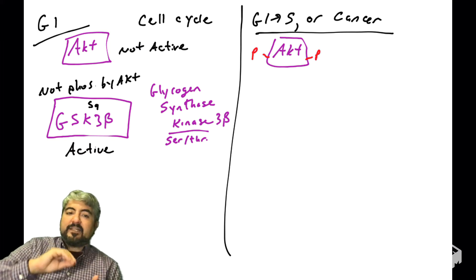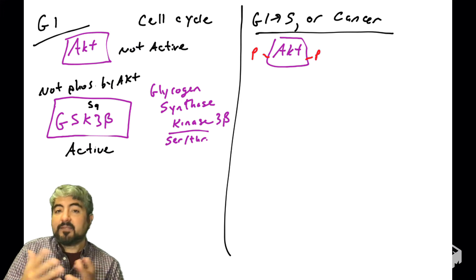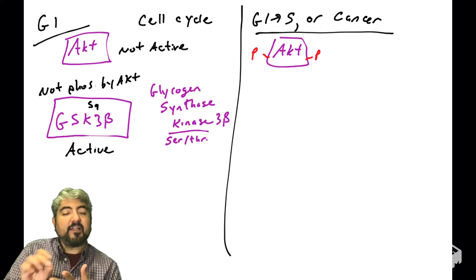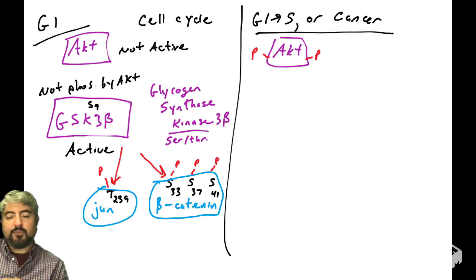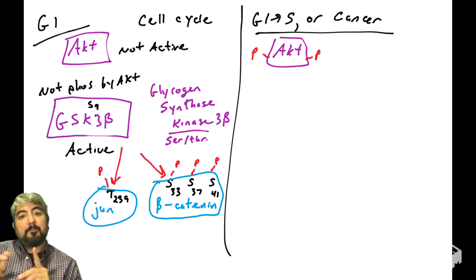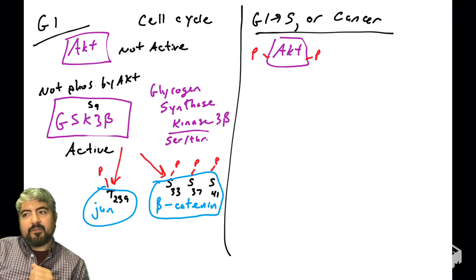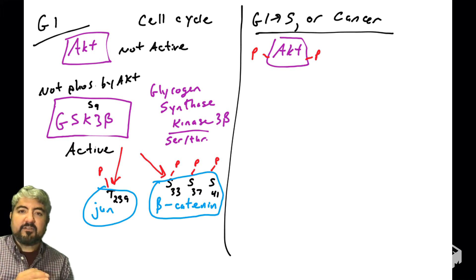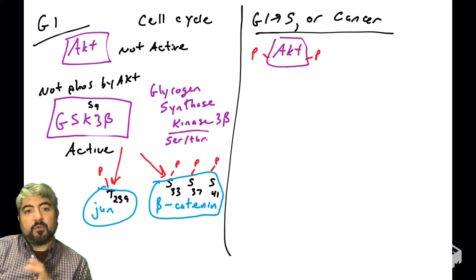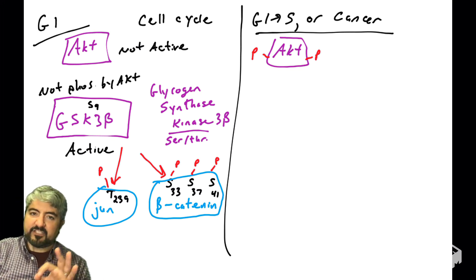When cells are in G1, GSK3-beta is not phosphorylated on serine 9 by AKT, and this allows GSK3-beta, the kinase, to be in its active form — so it will phosphorylate its substrates. I'm going to introduce two substrates: Jun (J-U-N) and beta-catenin. The phosphorylation sites are threonine at position 239 on Jun, and serines at positions 33, 37, and 41 on beta-catenin. These two proteins are substrates of GSK3-beta, not substrates of AKT.